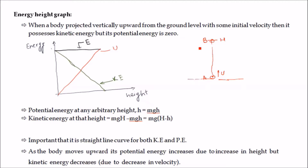We term the ground point as A and the topmost point as B. The potential energy at point A will be zero, as the body is at ground level, and kinetic energy will be at the maximum value: KE = ½mv². At point B, the potential energy equals mgH and kinetic energy will be zero, as the body is at rest.